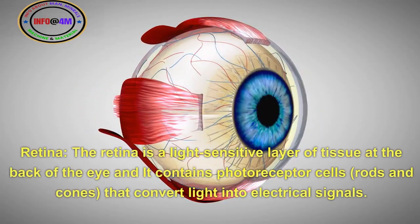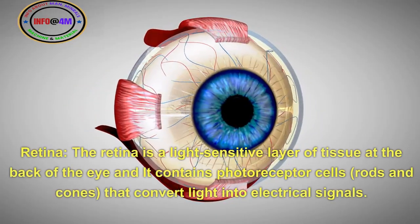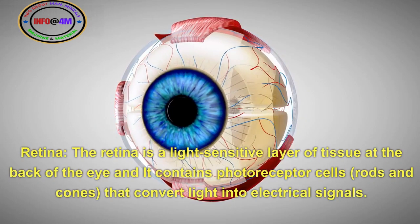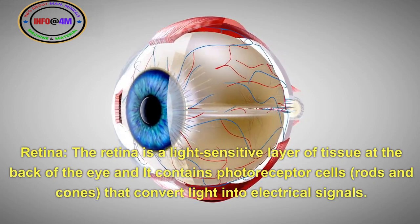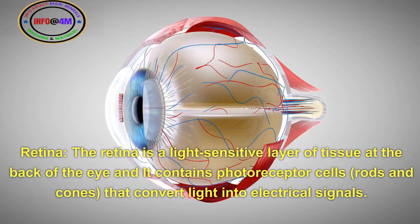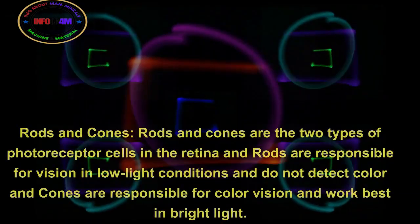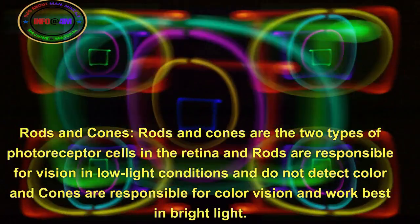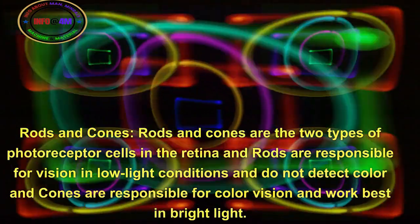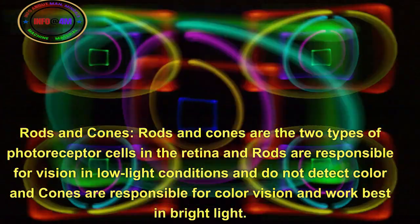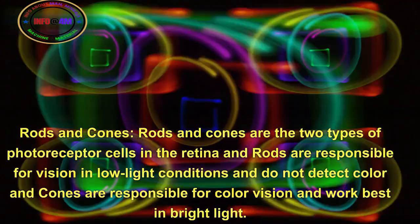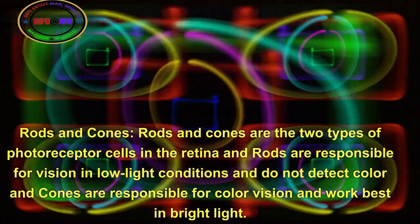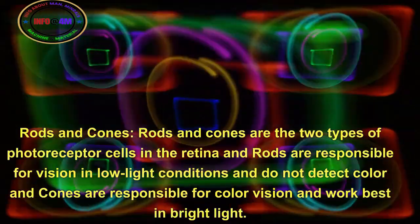The retina is a light-sensitive layer of tissue at the back of the eye and it contains photoreceptor cells — rods and cones — that convert light into electrical signals. Rods and cones are the two types of photoreceptor cells in the retina. Rods are responsible for vision in low-light conditions and do not detect color, and cones are responsible for color vision and work best in bright light.